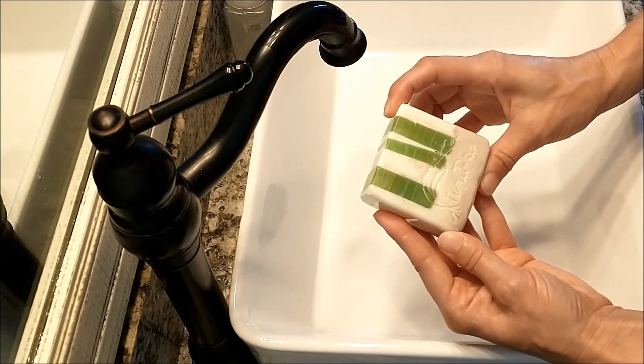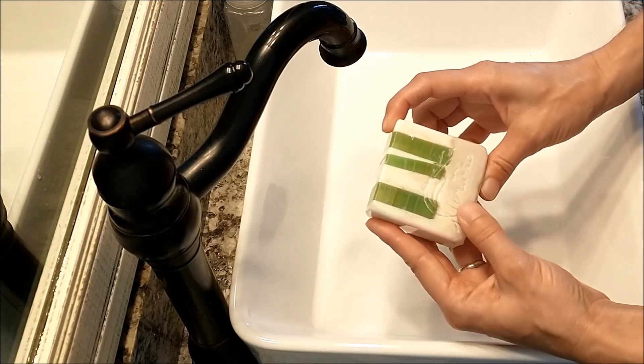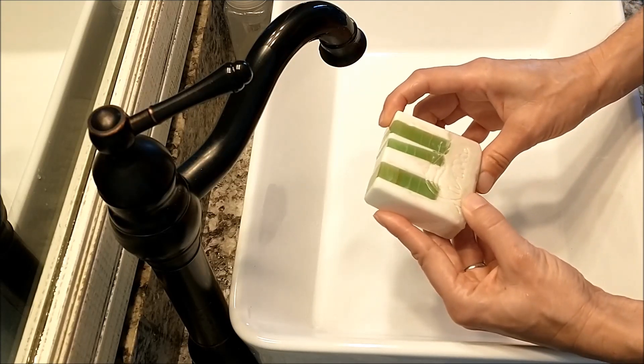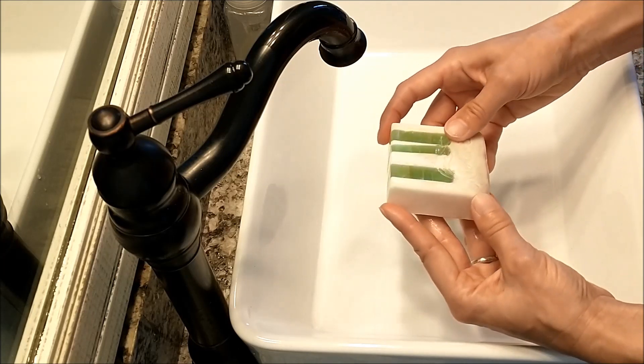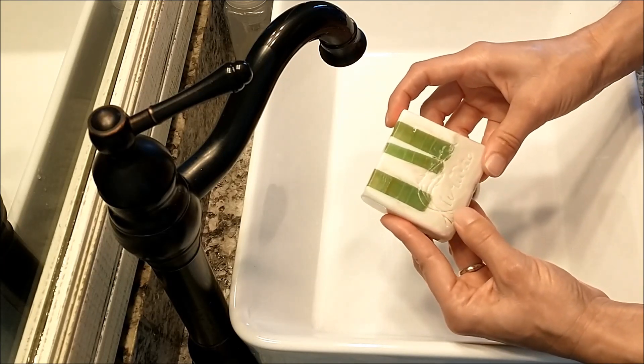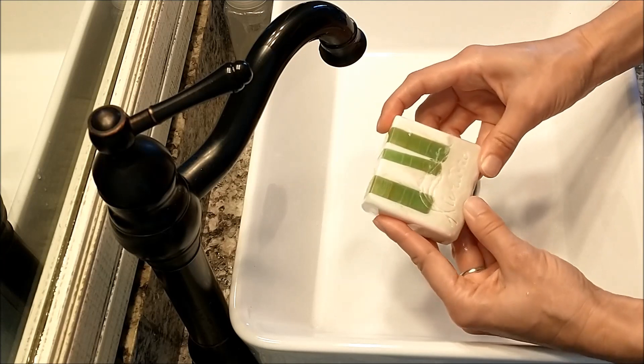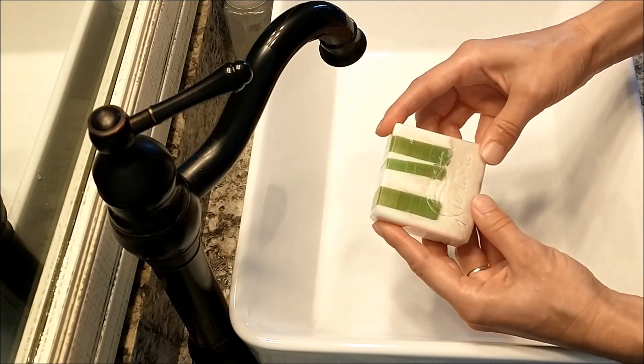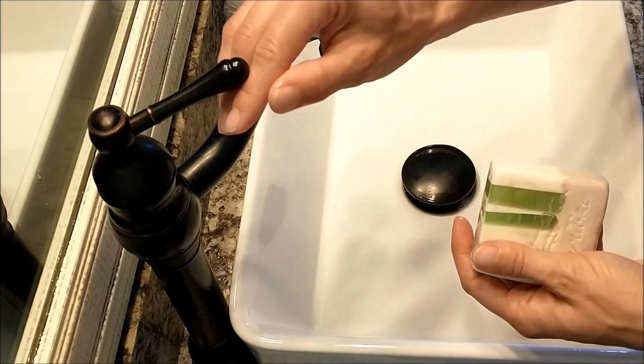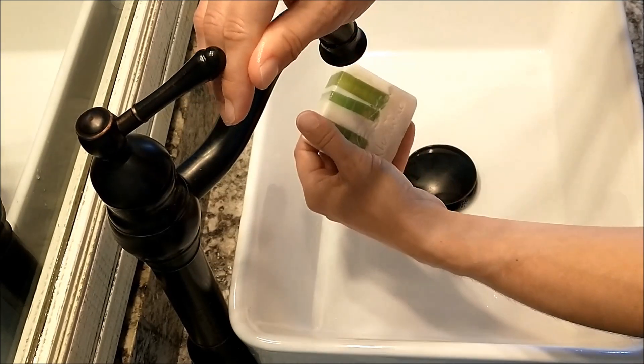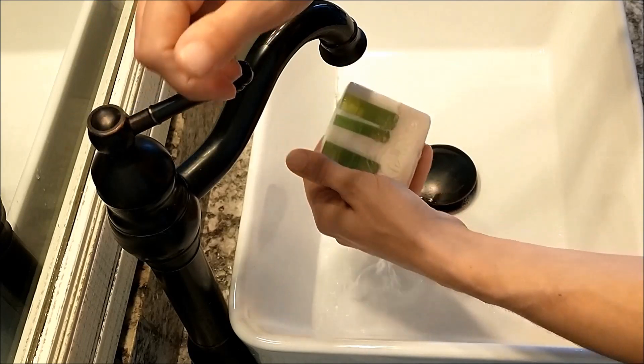The first one is a melt and pour glycerin type soap. This is a mix of a goat's milk one and a regular clear one. This did not have any detergents in it—I do not buy the ones with detergents, so this is purely soap. The other five are cold process.